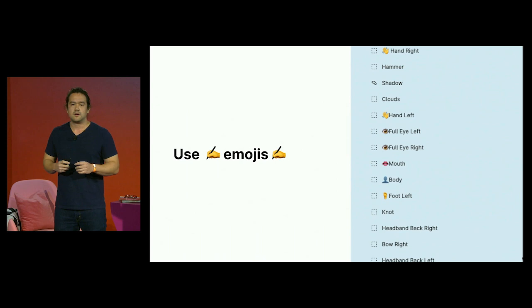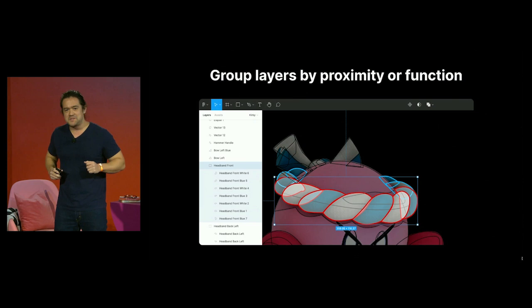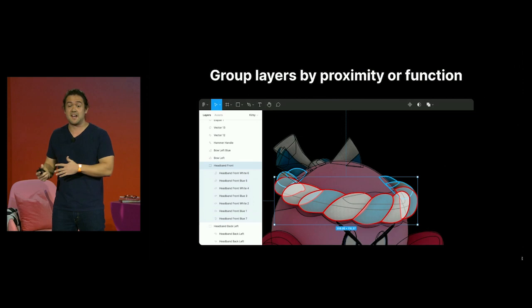One trick I've started doing recently is using emojis, especially when it comes to portraits and characters. Not only is it cute and fun, but you can also use it to help find layers and groups quickly. Since you'll probably be having a ton of layers, you'll need to group them to help keep things clean. Group layers if they're close together or related to each other — for example, the front of the headband is one group and the ones in the back are two separate ones. This makes moving them around, showing and hiding, adjusting them, and adding effects and styles to a lot of layers quite simple. Also, if you don't feel like naming every single layer, grouping is one way around it.